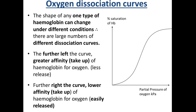Each type of hemoglobin behaves differently under different conditions, so there are lots of different dissociation curves. If the curve is further to the left, that means there is a greater affinity — greater take-up of hemoglobin for oxygen — so it doesn't release it as easily. If it moves to the right, that means there is a lower affinity for oxygen, so it's more easily released to the tissue. This tends to be the case for more active, high-metabolism animals.